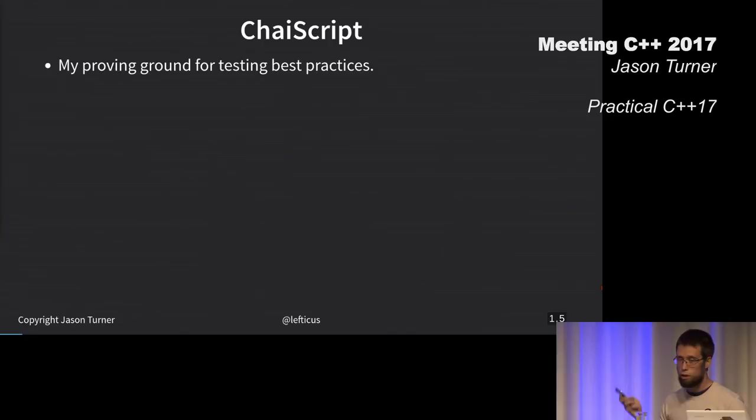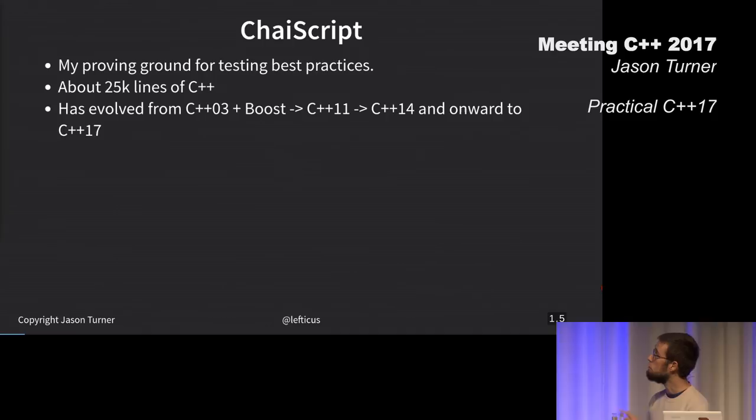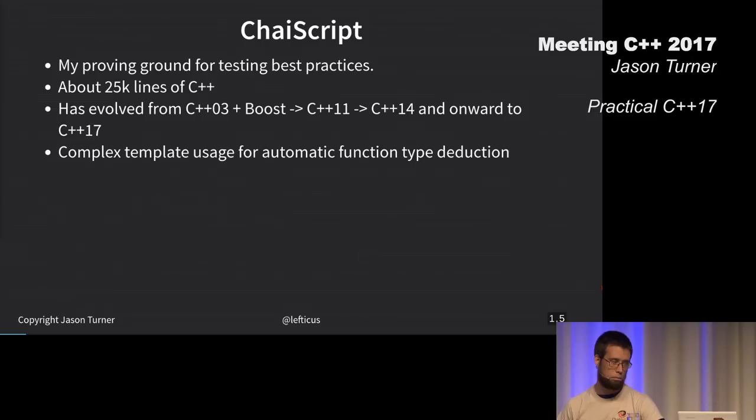This is my proving ground for my best practices. It's about 25,000 lines of code. I think this is the right size that I can keep most of it in my head. It has evolved from a library that started as C++ 03 with boost into C++ 11 and 14, and again, 17. I've got lots of complex template usage for type deduction.